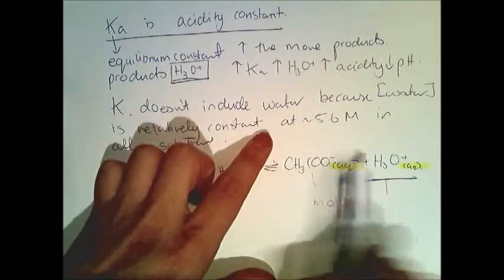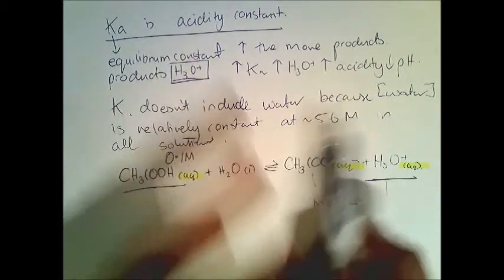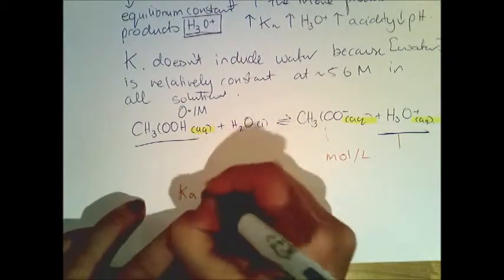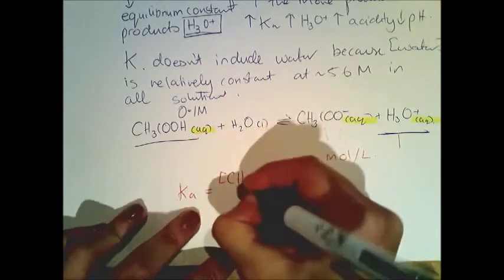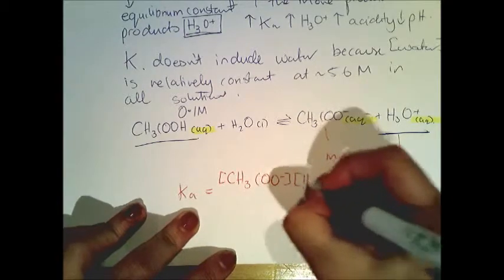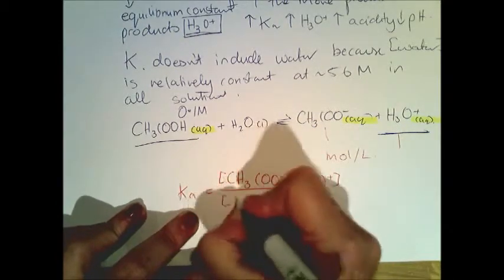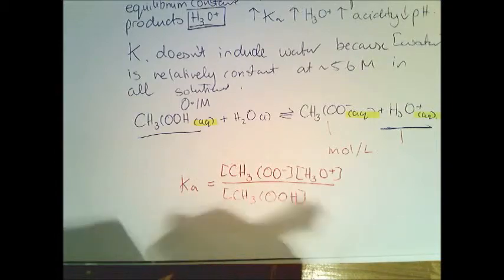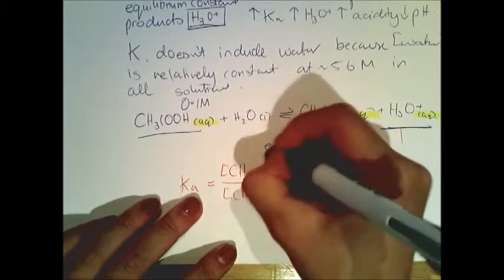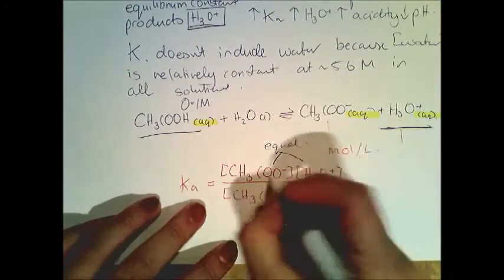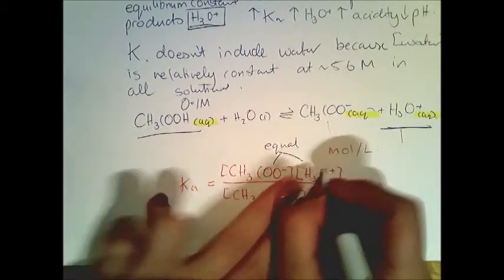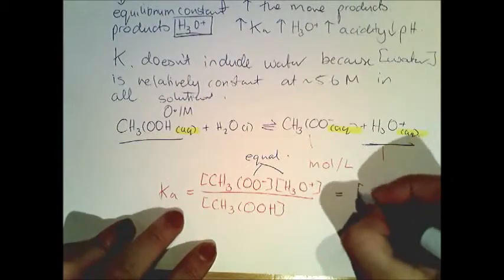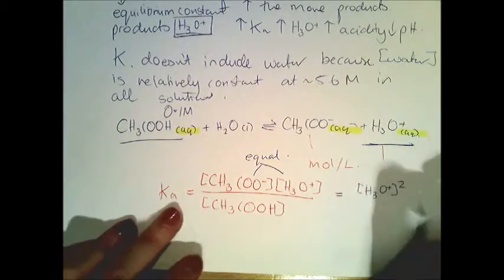When we write out our expression: Ka equals the concentration of CH3COO minus times the concentration of H3O+ divided by the concentration of CH3COOH. Since these two product concentrations are equal, the numerator becomes H3O+ squared. So Ka equals H3O+ squared divided by the concentration of the acid.